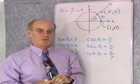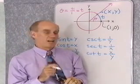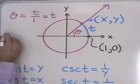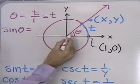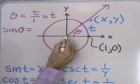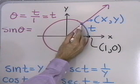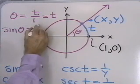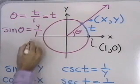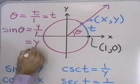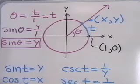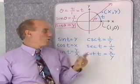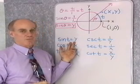Let's go back to our original definition 1 for the trigonometric functions and find the sine of θ. The sine of angle θ — θ is in standard position, so all I need is a point on the terminal side. Well, x, y is on the terminal side. The sine of θ is the y-coordinate divided by the radius, which is 1, and that just comes out to be y. So sine θ equals y, whether I use definition 1 or this new definition 3.